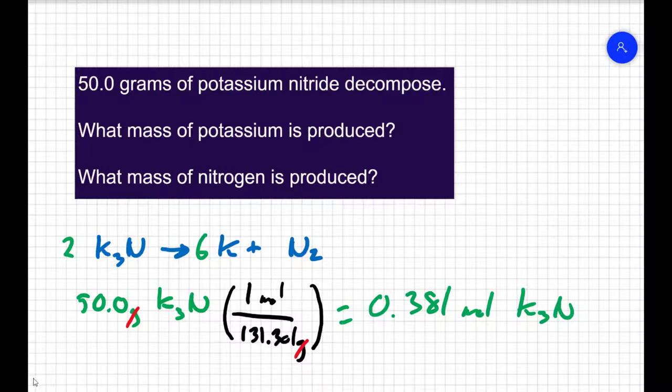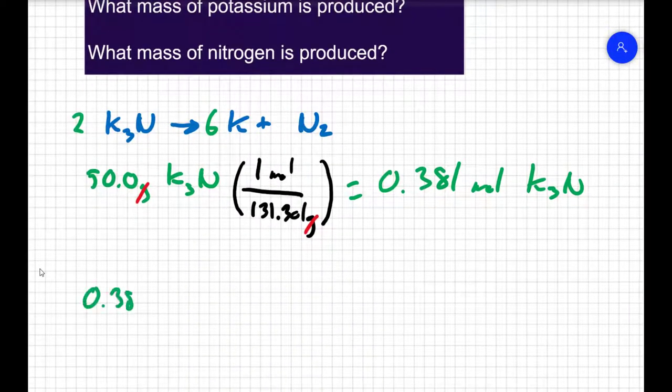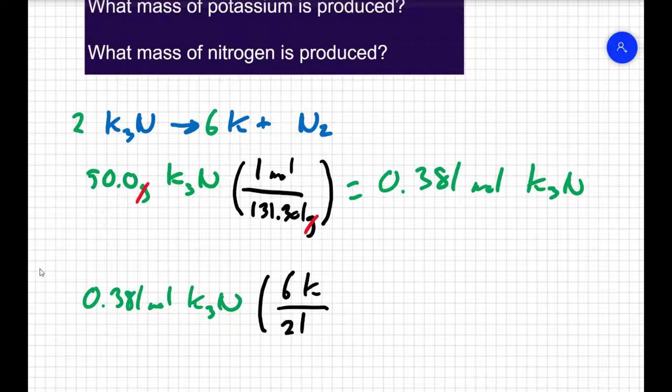I've converted my data to moles, so now it's time to figure out how much potassium we make. If I have 0.381 moles of potassium nitride, how much potassium do I make? From the balanced equation, I make six moles of potassium for every two moles of potassium nitride. You can simplify that to a 3 to 1 ratio. If I start with 0.381 moles of potassium nitride, I'm going to get 1.14 moles of potassium.